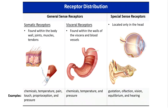Starting with distribution — the most basic distinction is between general sense receptors and special sense receptors. General sense receptors are found throughout the body and are overall structurally pretty simple, while special sense receptors are located only in the head. General sense receptors can also be subdivided into somatic receptors, found within the body wall and distributed throughout the skin, and visceral receptors, found in the walls of the viscera, internal organs, and blood vessels. Those receptors are primarily responsible for detecting things such as chemicals, temperature changes, pain, touch, and pressure.